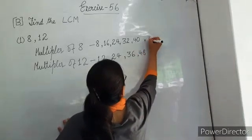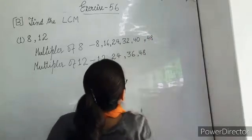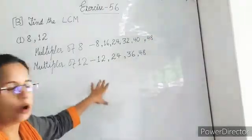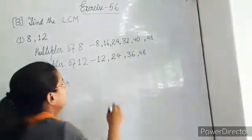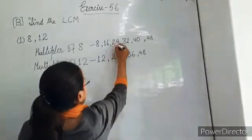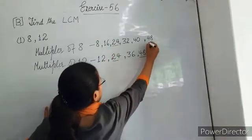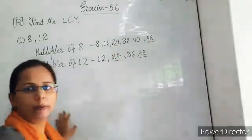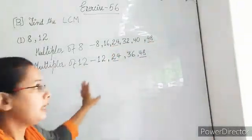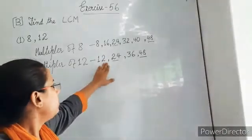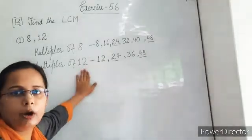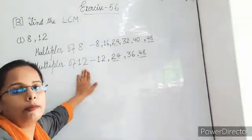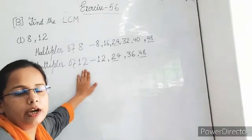We have also 48. Now see what are the common multiples? Common multiples: 24 and 48. These are the common multiples — 24 and 48 are the common multiples of 8 and 12, meaning the first two common multiples of 8 and 12.